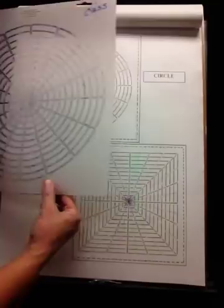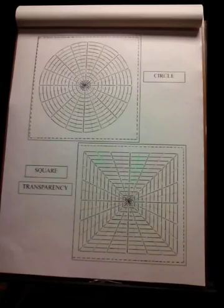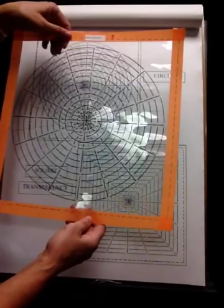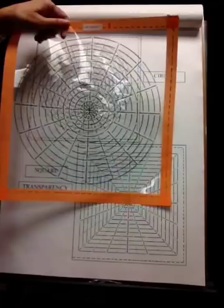This is what the stencils look like full size. We've got the circle, the square, and then I've added the transparencies. The transparencies are made from overhead projector film with the grids printed directly on here. You can see I've got an orange border on the transparencies - this is brightly colored masking tape.